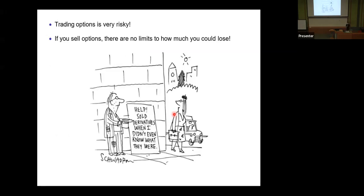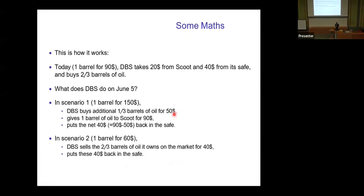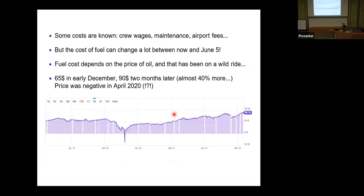This is also why options are popular — they're very risky. And this is only if you buy options. If you actually sell options, if you're on the other side of the trade like DBS, there is no limit to how much you could lose — you can potentially lose an infinite amount of money. So this is just a reminder: do not trade options, or at least not until you're really sure about what they are.